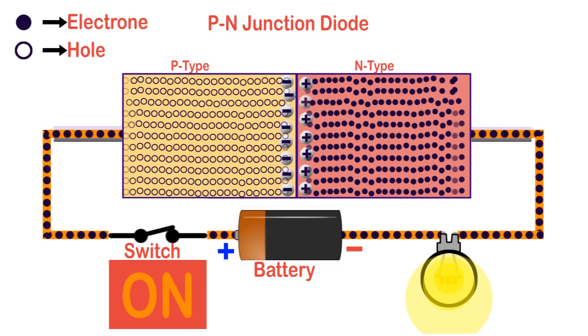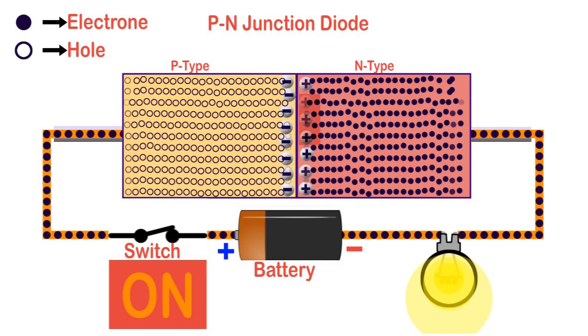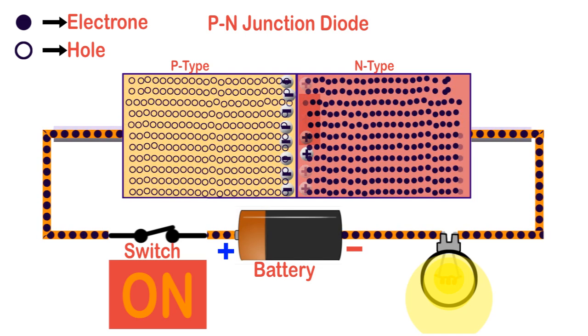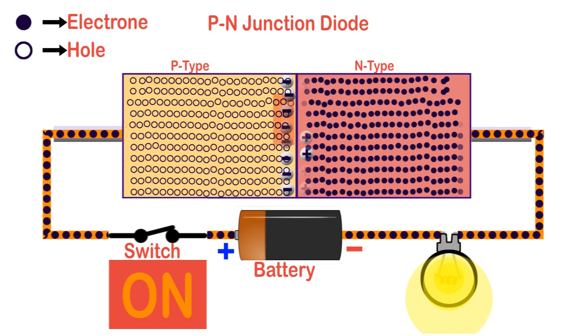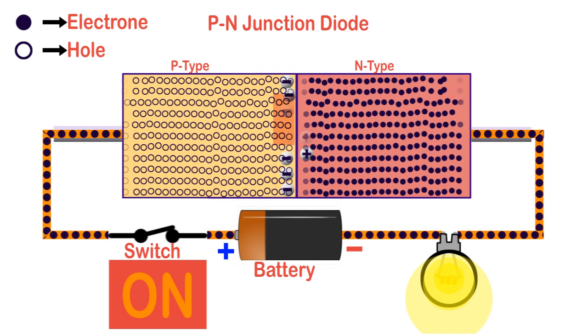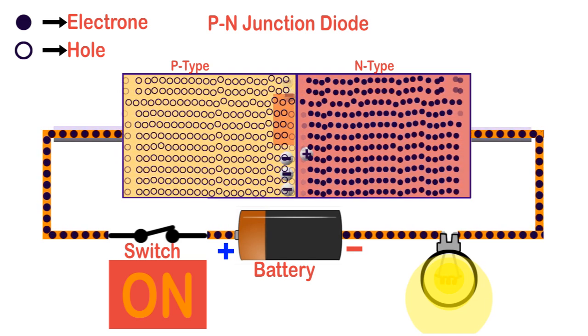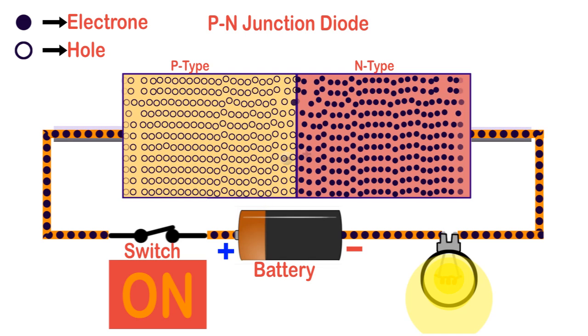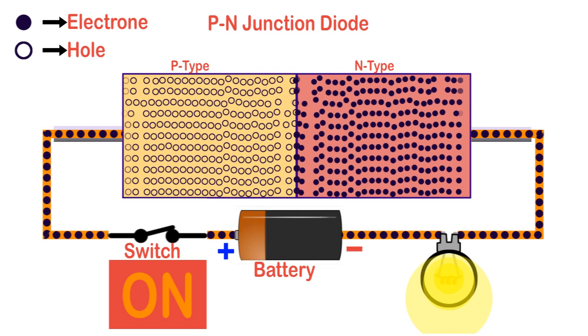The electrons start combining with positive ions of the depletion region and convert them into neutral atoms. Similarly, holes from the P region enter the depletion region and combine with negative ions, neutralizing them. As a result, the width of the depletion layer is reduced.